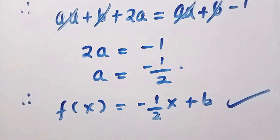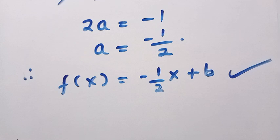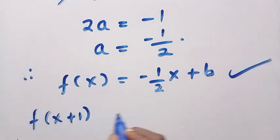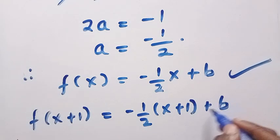But if you want to verify if this equation truly satisfies, like the left-hand side and the right-hand side are equal, what we just do is for the first one, which is f(x+1), we are going to substitute it here and we have minus 1 over 2 into bracket of x+1 plus b.